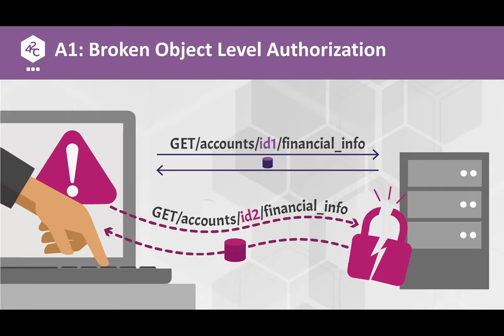Number five is Broken Function Level Authorization, very similar to number one but different. Here, instead of using someone else's object ID, a user changes a parameter or part of the path to jump from a regular user-level API to some sort of admin or privileged function they're not supposed to access. They guess the proper parameters or path, make the call, and the backend — trusting the client — doesn't properly check authorization and grants access.